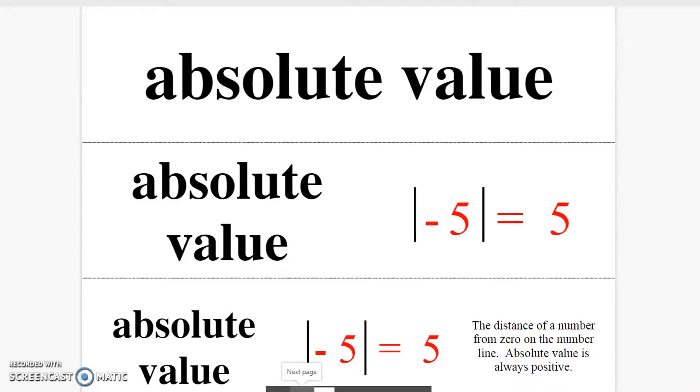Absolute value. The distance of a number from zero on the number line. Absolute value is always positive.